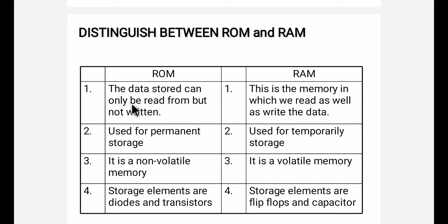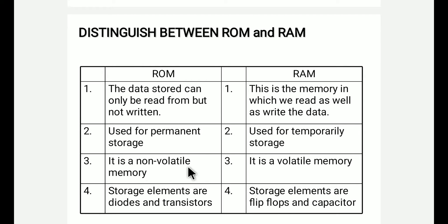ROM can only be read from, but not written to. RAM is the memory in which we can read as well as write data. In ROM we can only do read, but in RAM we can do both read and write. ROM is used for permanent storage of data.